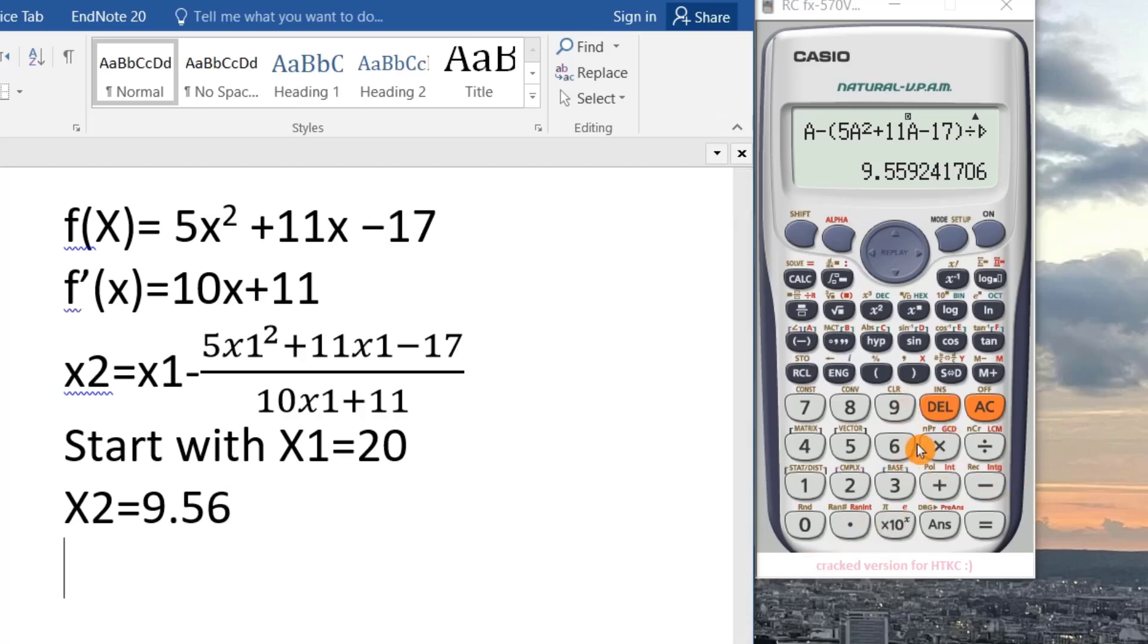This time x3, just have to click equal, it inputs x2 = 9.56 directly. This time equal, the closer value is 4.44. We are more closer to the real root, 4.46.